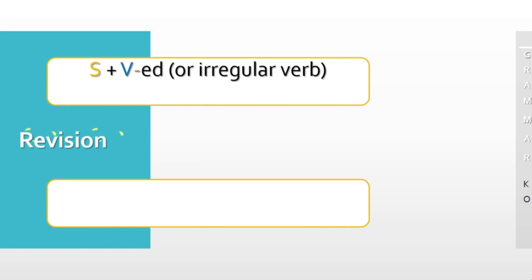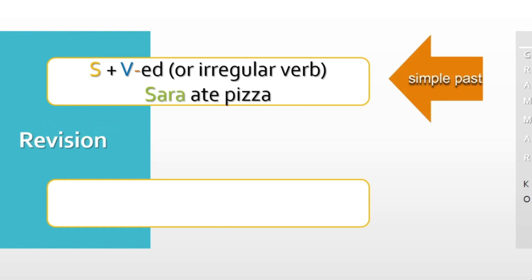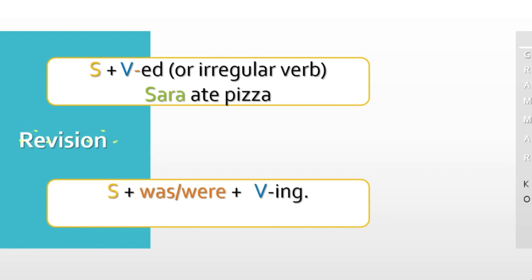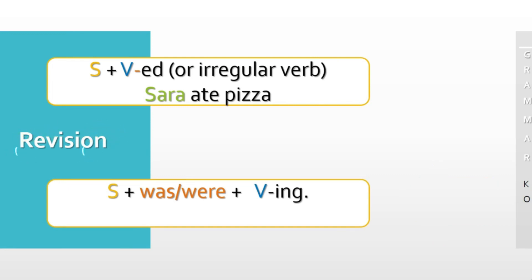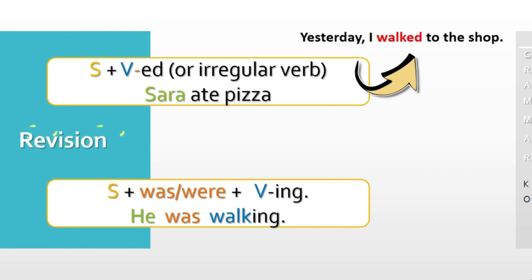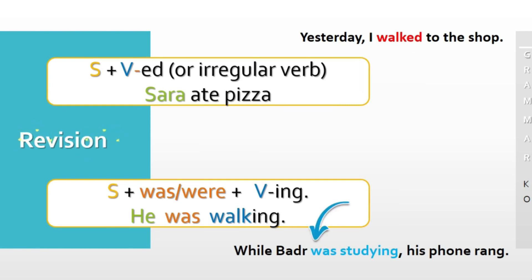Let's revise everything. We can make the simple past by using subject plus verb with the suffix -ED, or an irregular verb — like 'Sarah ate pizza.' As for the past continuous, it is subject plus 'was' or 'were' plus verb plus -ING — like 'He was walking.' Earlier examples: 'Yesterday I walked to the shop,' and 'While Badr was studying, his phone rang.' This is how you make a sentence in the simple past and in the past continuous.